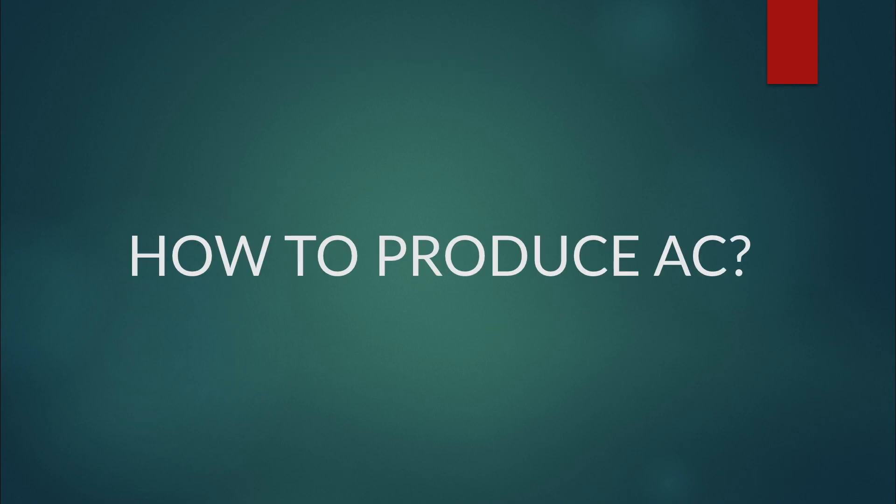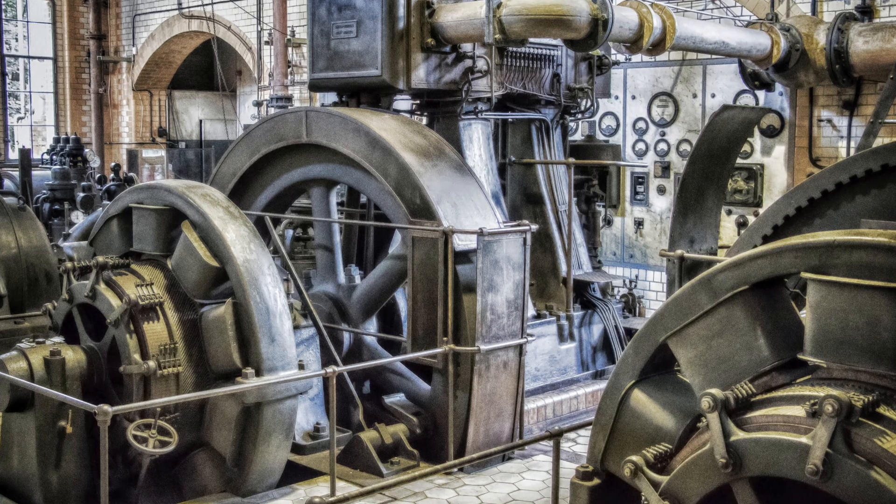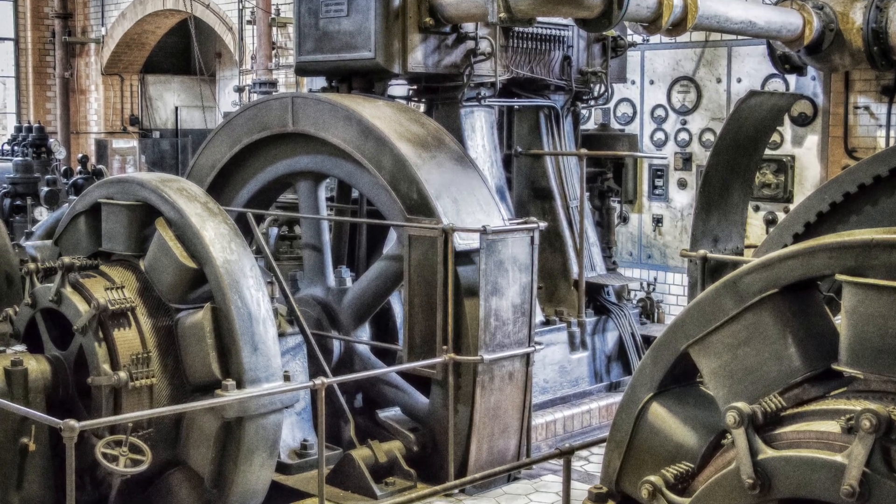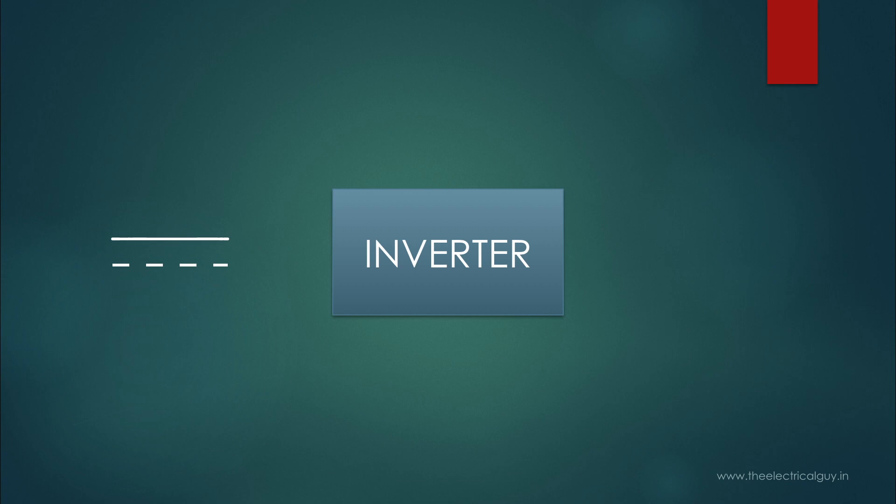Now the question is how can we generate AC? Of course by using the machine we just saw which is called as alternator. And also, an equipment called inverter can convert stored DC into AC.